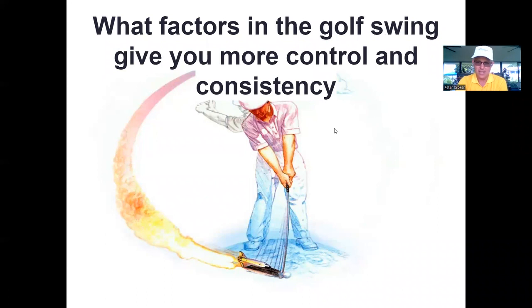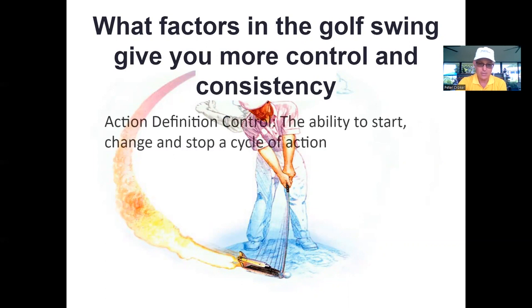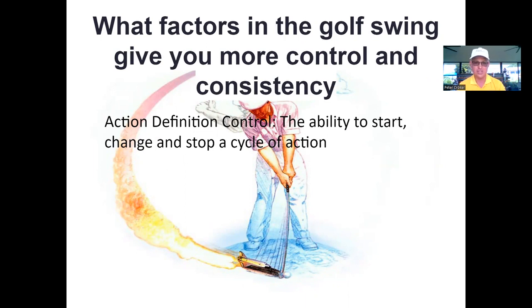Let's look at the factors in the golf swing that give you more control and consistency. The definition of control is the ability to start, change, and stop a cycle of action — starting something, changing it while in motion, then finishing it. Where does it finish, Pete?